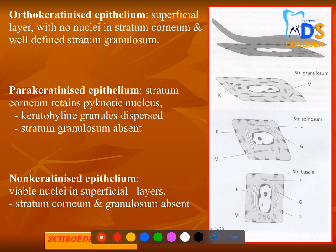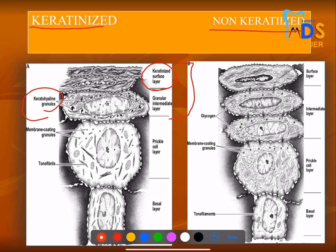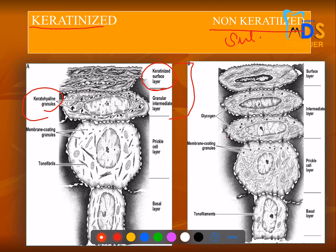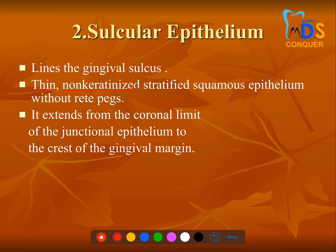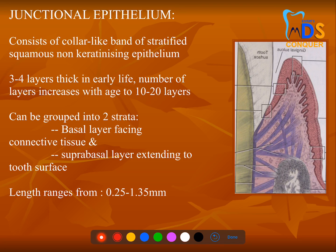Orthokeratinized, parakeratinized, and non-keratinized differences can be appreciated in the slide. Keratinized tissue shows keratin granules in the superficial layers; non-keratinized tissue does not. Sulcular epithelium is thin and non-keratinized. There are two star enzymes associated with the sulcular epithelium — please remember and make note of them.